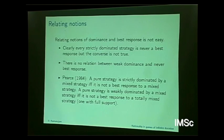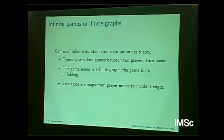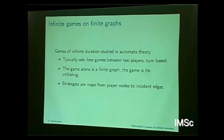An analog of Pearce's theorem for regular infinite games is very hard to prove, and that's really where I want to get to. For infinite games on finite graphs — games of infinite duration studied in automata theory, typically win-lose games between two players, turn-based, where the game arena is a finite graph and the game is the tree obtained by unfolding — strategies are now maps from player nodes to incident edges in the tree.